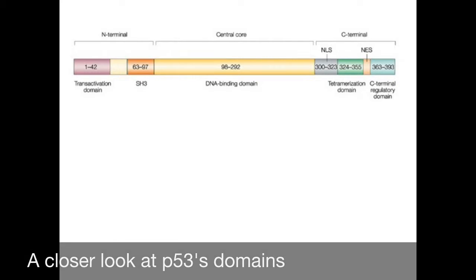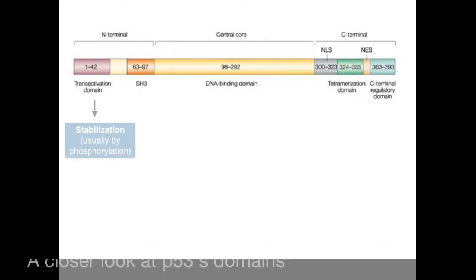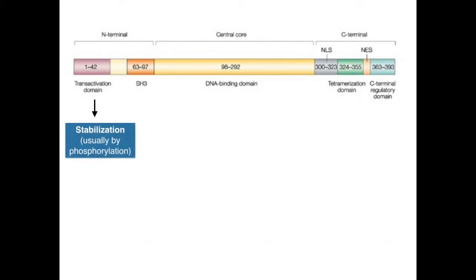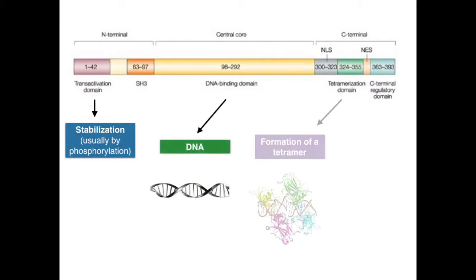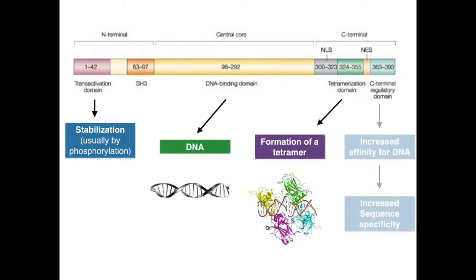P53 is a polypeptide that can be divided into multiple domains, where modifications of specific residues induce stabilization, affinity for DNA, and formation of proteomes. The stabilization of P53 is the first indication of genotoxic stress and a critical step for the proper functioning of P53.